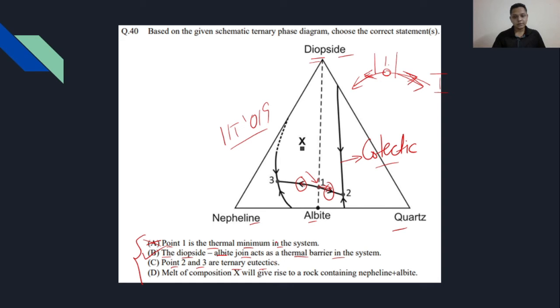Point 2 and 3 are ternary eutectics. As I have told you, all these cotactics are joining the binary eutectic to the ternary eutectic. You can see that this evolution path from every cotactic or from every binary eutectic shows that all these liquids are converging at point 2 and point 3 because these are the thermal minimum points. If you know, eutectic in even binary or ternary systems is always a thermal minimum point where all the liquid is ultimately crystallized at the eutectic point because it's a minimum thermal point of any system. So yes, it is correct that point 2 and 3 are ternary eutectics.